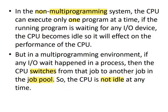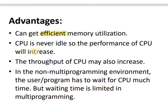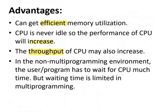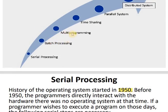The advantages of multiprogramming are: efficient memory utilization; the CPU is never idle, so performance increases; throughput of CPU also increases — throughput is the number of outputs per unit time. In a non-multiprogramming environment, the user or program has to wait much time for the CPU, but waiting time is limited in multiprogramming. So far we discussed three topics: serial processing, batch processing, and multiprogramming.